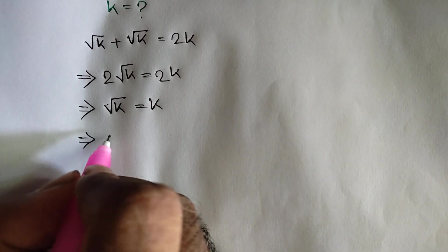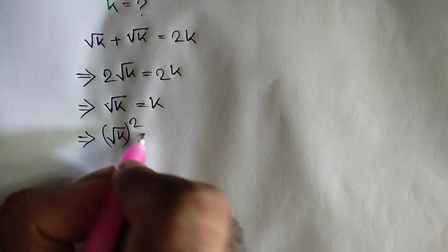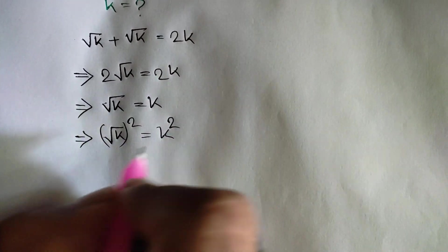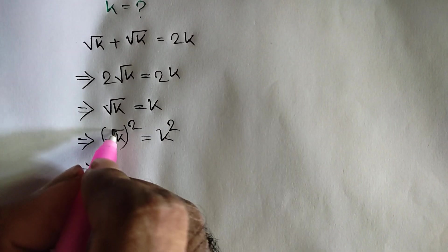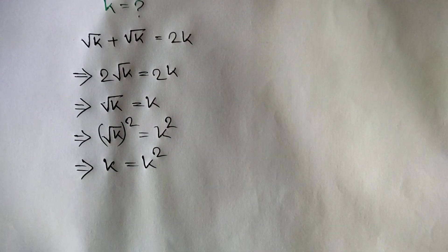Squaring both sides, we can write square root of k whole square is equal to k square. The square cancels out the square root, so it will be k is equal to k square.